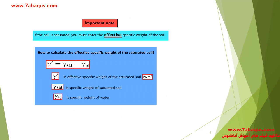Gamma prime is the effective specific weight of saturated soil. Gamma sat is the specific weight of saturated soil, and gamma w is the specific weight of water. If we subtract gamma w from gamma sat, we can calculate the effective specific weight of saturated soil. The unit of gamma and gamma prime is Newton per cubic meter.